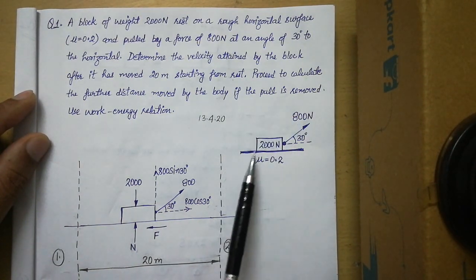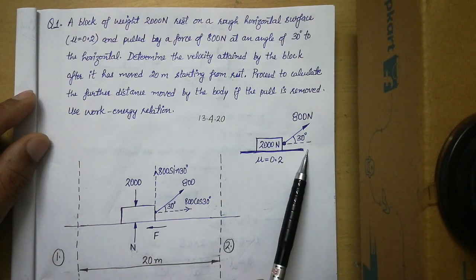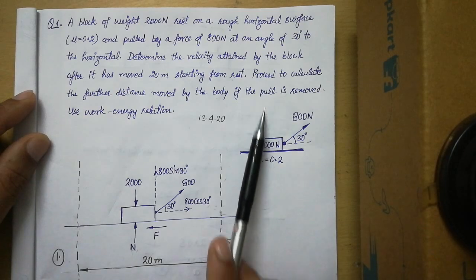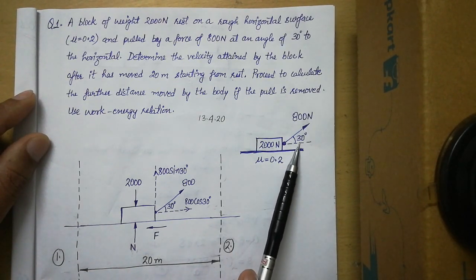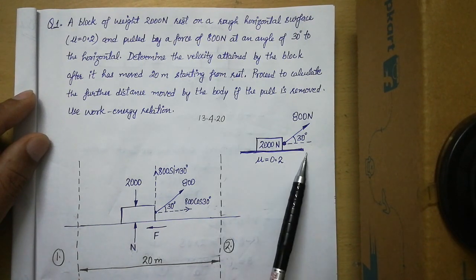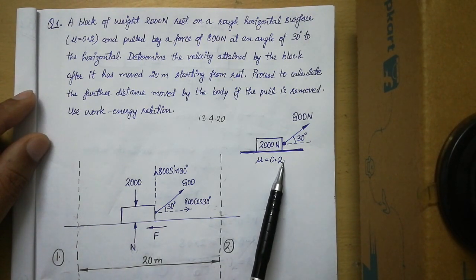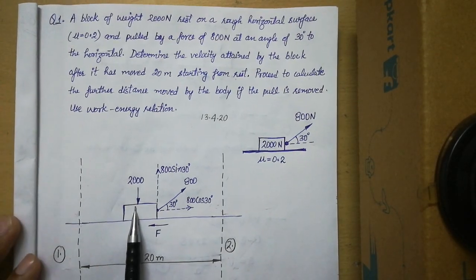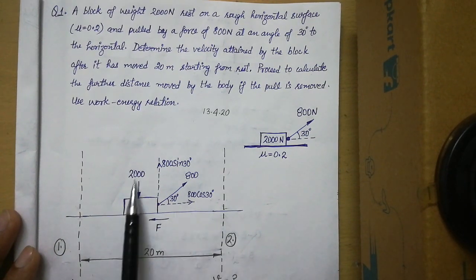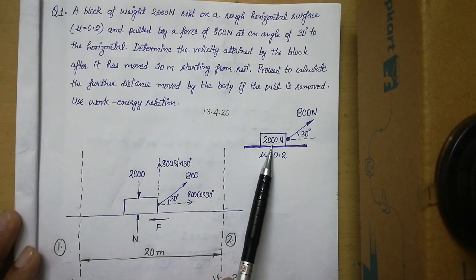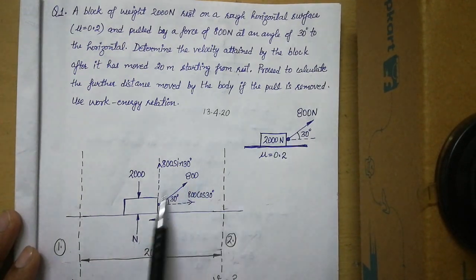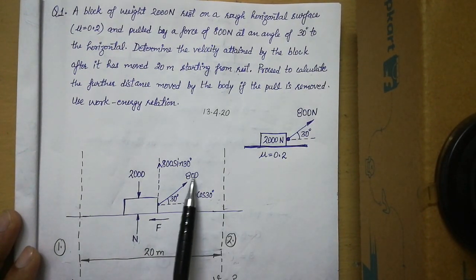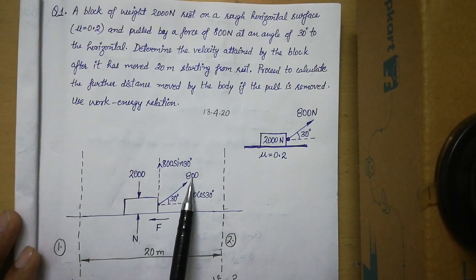To draw the free body diagram, we represent the block on the surface, then show its weight acting in the downward direction. Corresponding to that weight, we show the normal pressure. We also represent the applied force, and since it acts at an angle to the horizontal we need to find its components. As friction is present, we represent the frictional force in the direction opposite to the direction of motion.